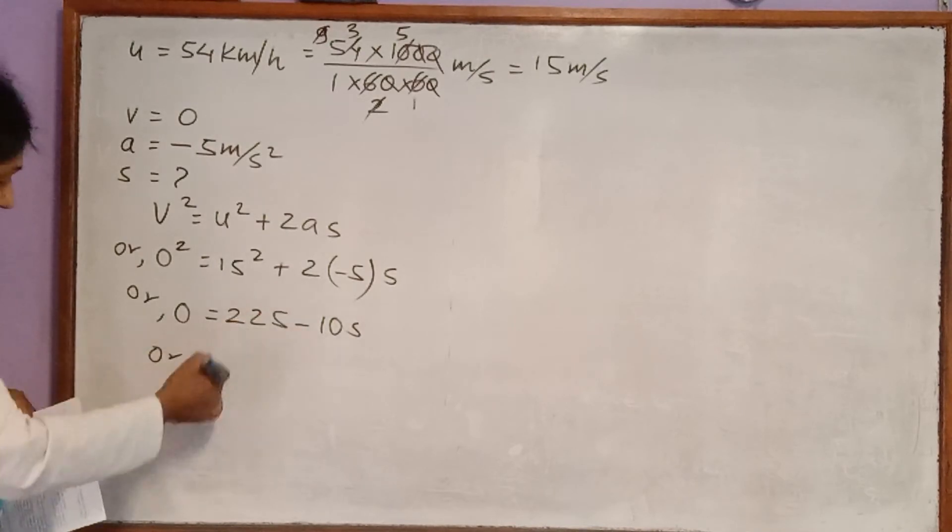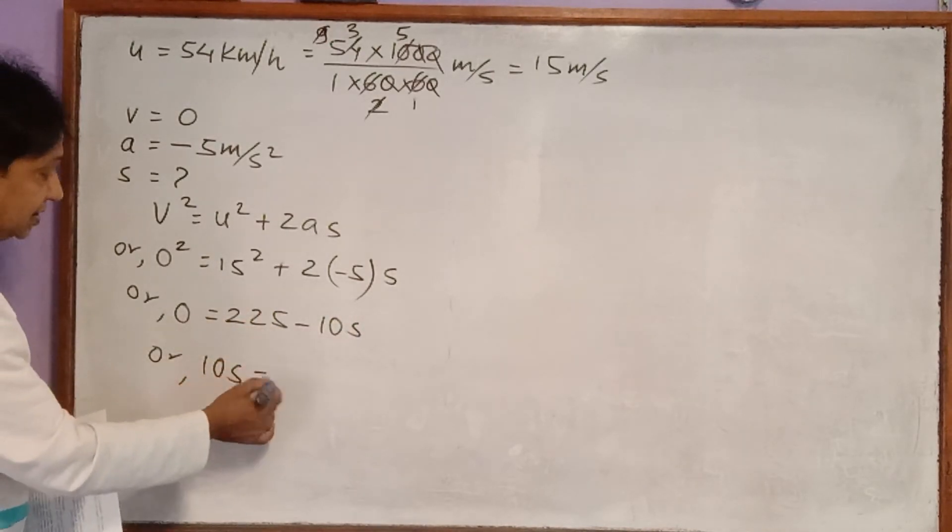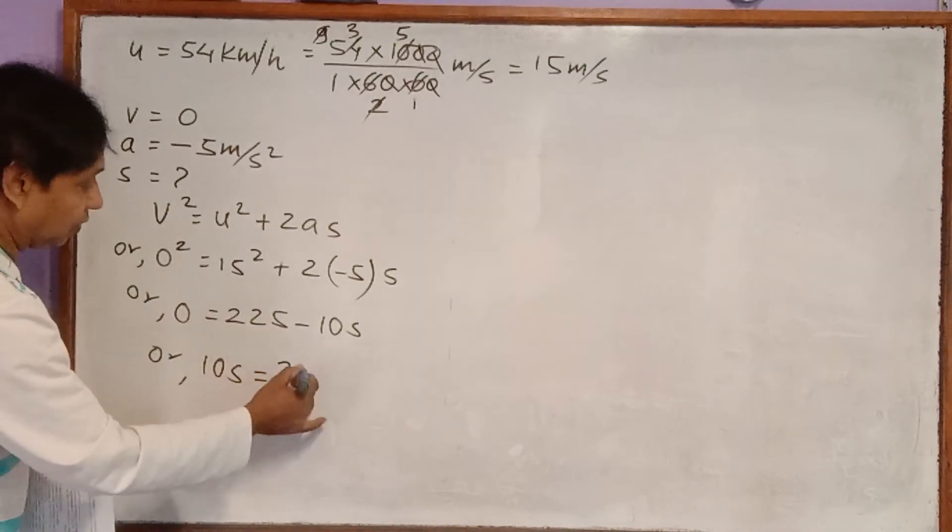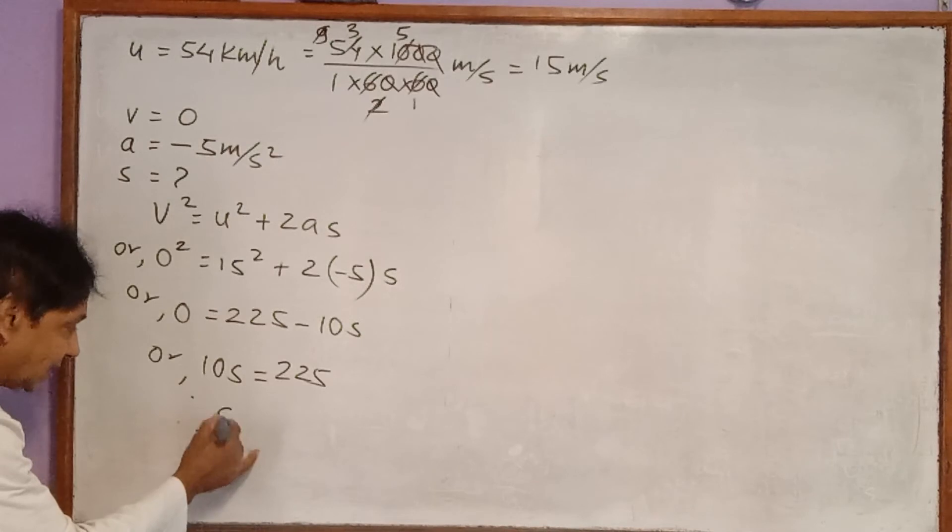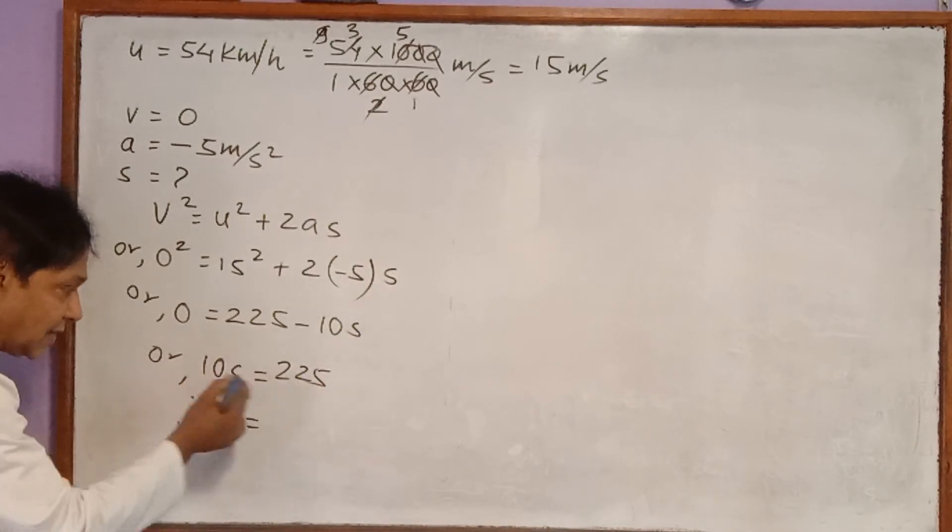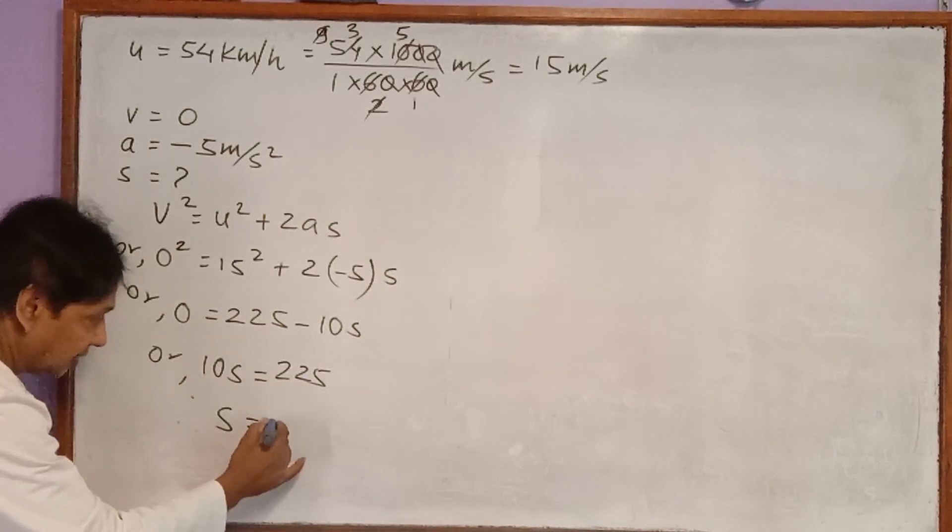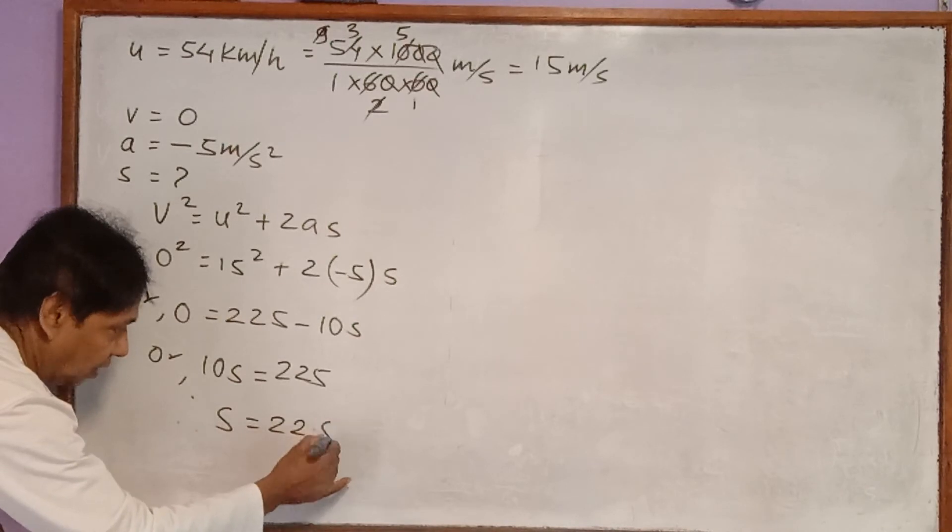If this minus 10 s is taken to the left hand side, it becomes 10 s. And this is equal to 225. Now therefore s is equal to 225 divided by 10. This is equal to 22.5.